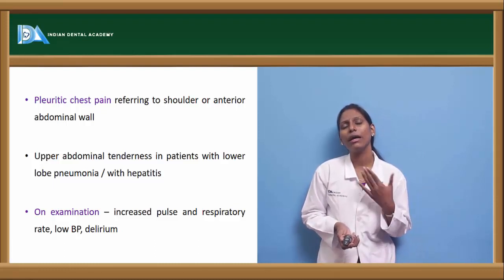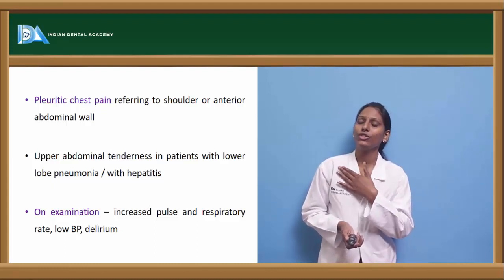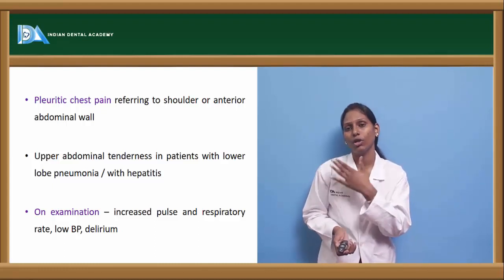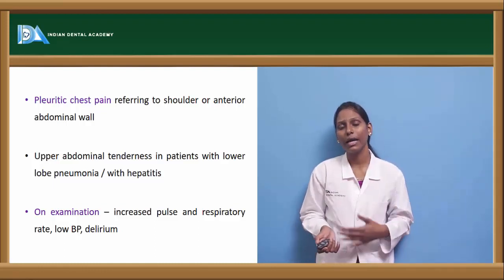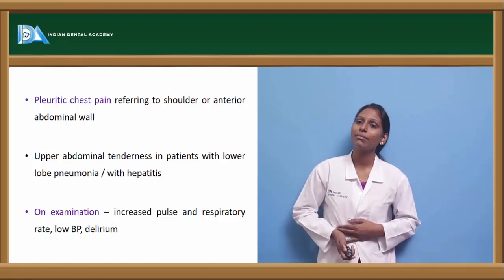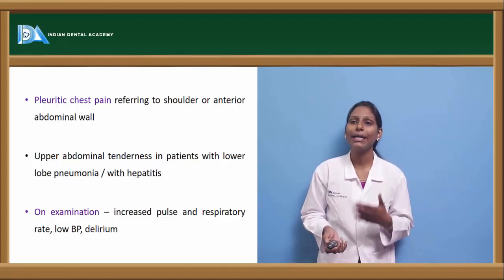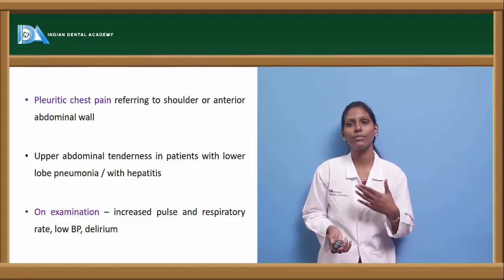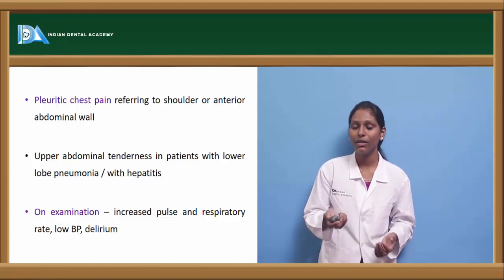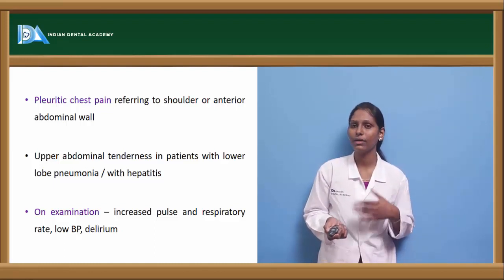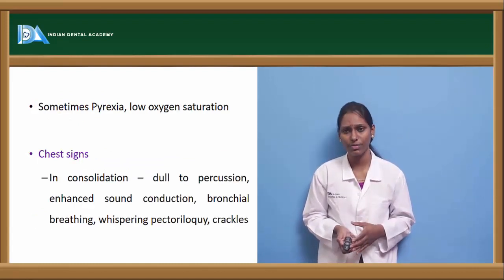Other clinical features include pleuritic chest pain, which may refer to the shoulder or anterior abdominal wall — this is a pathognomonic feature. Upper abdominal tenderness can be seen especially in patients with lower lobar pneumonia. Hepatitis can also be seen. On examination, there can be increased pulse and respiratory rate, low blood pressure, and patients may manifest delirium. Pyrexia and low oxygen saturation can also be seen.